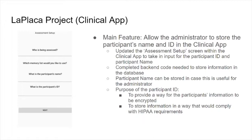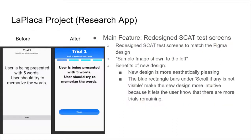The participant name can be stored in case it is useful for the administrator, and the purpose of the participant ID is to provide a way for the participant's information to be encrypted and stored in a way that complies with HIPAA requirements. My second contribution regards the research app — redesigning the SCAT test screens to match the Figma design. The new design is more aesthetically pleasing with more color, and the blue rectangle bars under the text scroll if any is not visible, making the design more intuitive by letting the user know more trials remain.